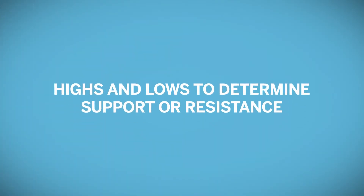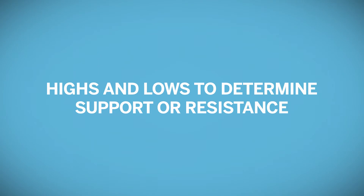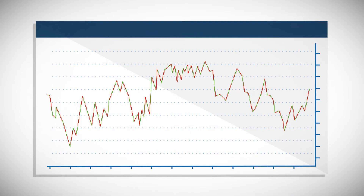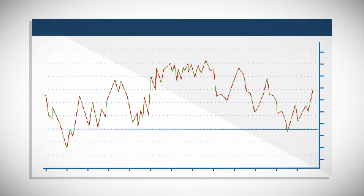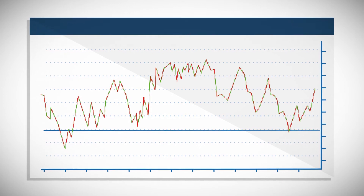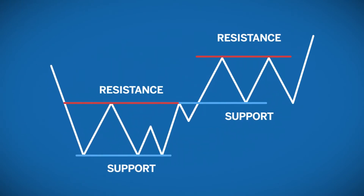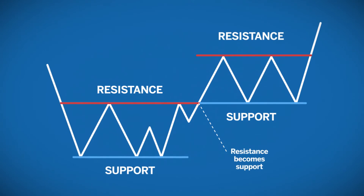Other ways technical analysts look for support and resistance are at points where market price made previous highs and lows. If a market is moving up, it will tend to encounter resistance at a previous high. If a market is moving down, it will generally find support at previous lows. If price breaks through price support, then it will generally continue in that direction. When price breaks through support or resistance, these levels will reverse — support will become resistance, and resistance will become support.